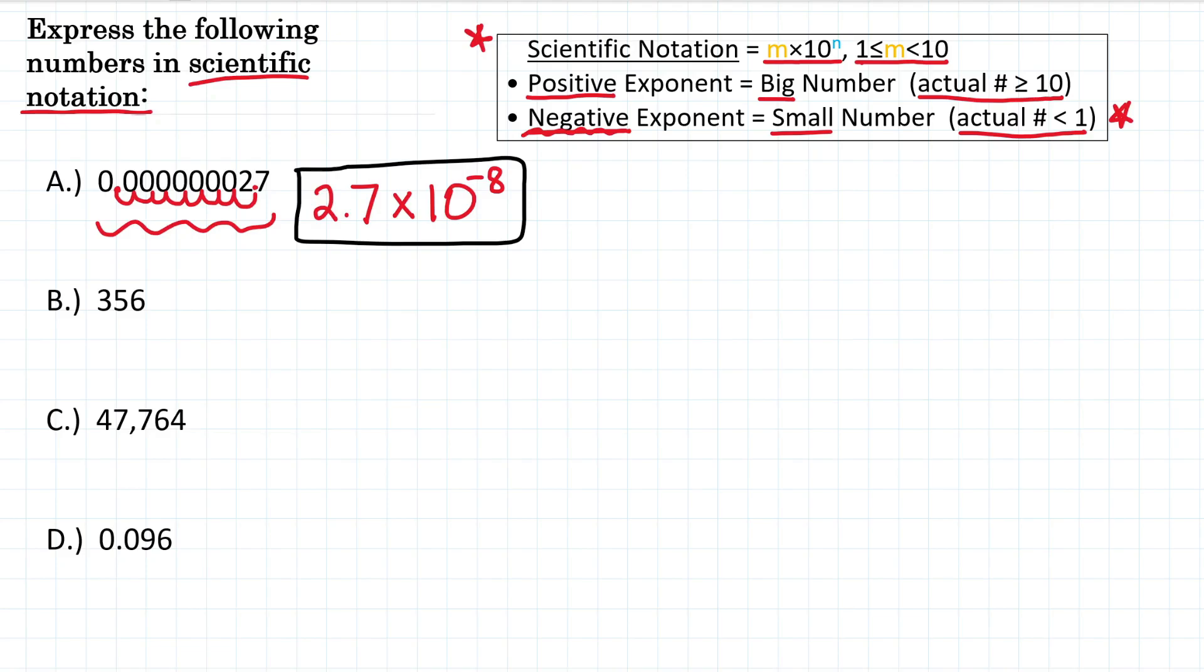Alright, now let's look at B. We have 356. So our decimal is right here. To get our m value that's in between 1 and 10, we're going to need to move the decimal 1, 2 places to right after the 3. Because that gives us 3.56. So the first part of our scientific notation is in between 1 and 10. And then we have times 10. And what is our power of 10?